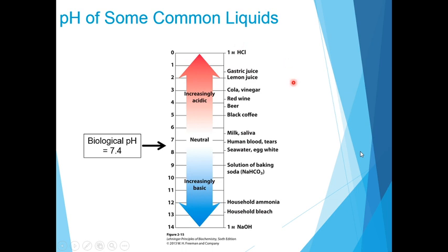The pH of some common liquids: soft drinks such as cola, alcoholic beverages like red wine and beer, black coffee, and lemon juice are acidic. Milk, human saliva, human blood, sea water, and egg white all come close to neutral pH. Household bleach and household ammonia, which are toxic, are increasingly basic with high pH. Biological pH is close to 7.4.